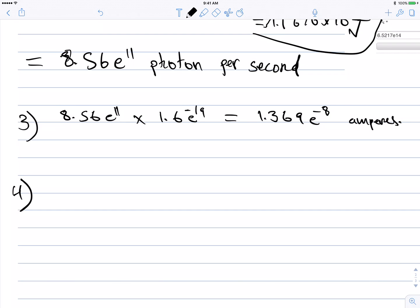For number four, they're telling us what is the cutoff frequency. So cutoff frequency means that the kinetic energy is going to be equal to zero. That means hf is going to be equal to the work function.